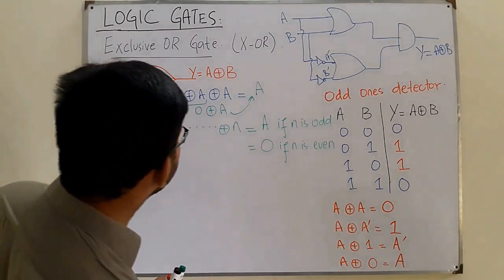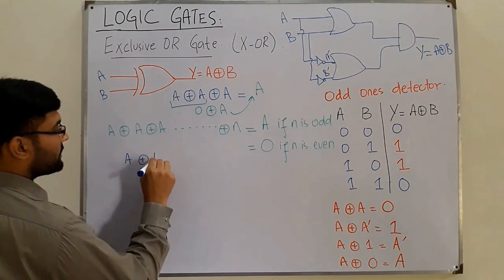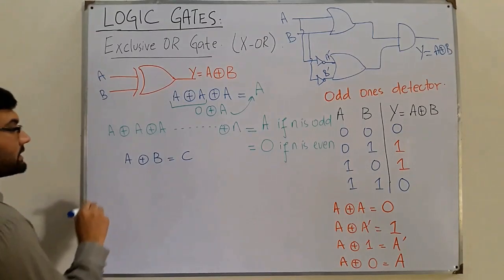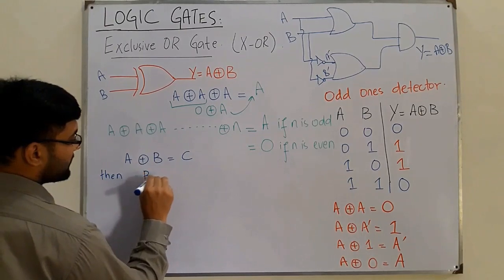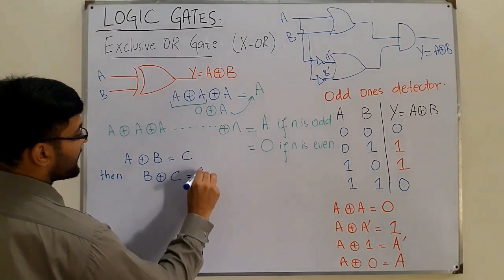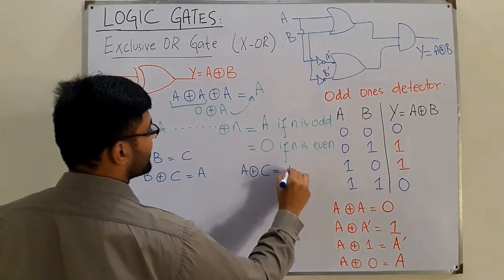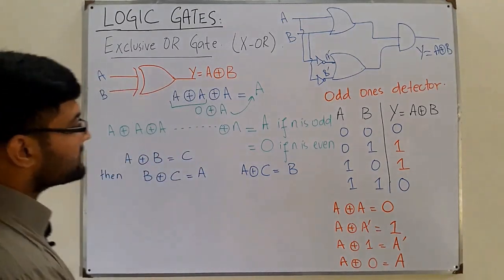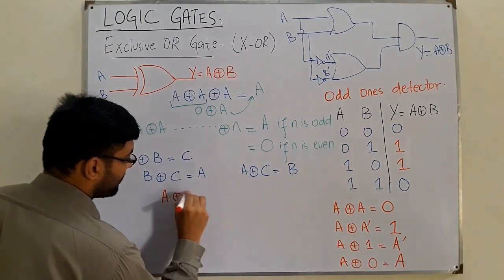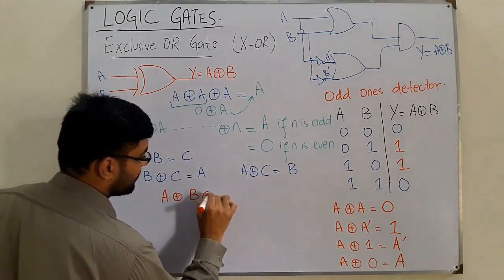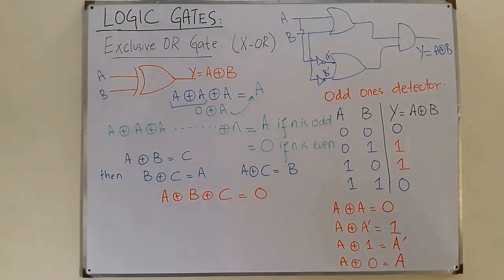An important algebraic property: if A XOR B = C, then B XOR C = A, and A XOR C = B. This implies that A XOR B XOR C = 0 when those substitutions hold. This is a very important property of the XOR operation.